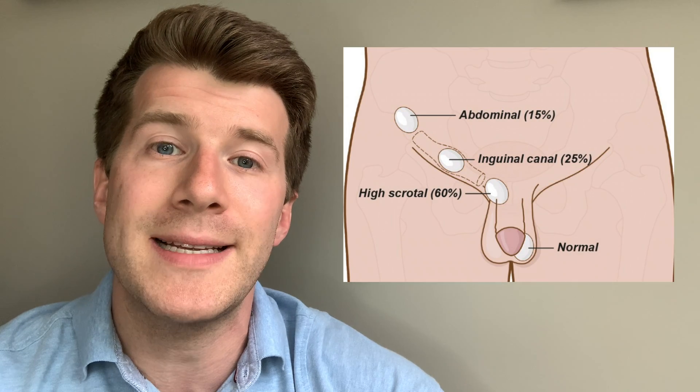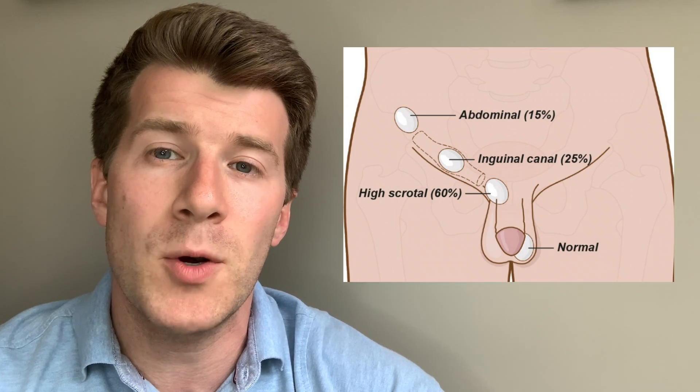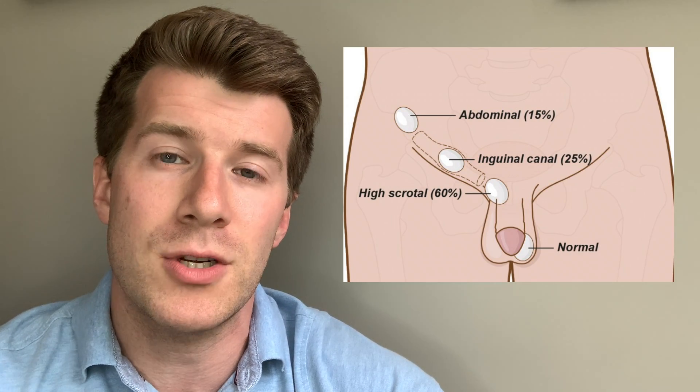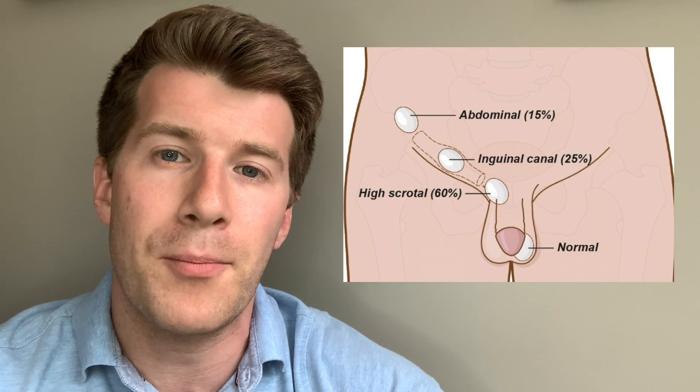AMH can also be measured in male infants who have undescended testicles to determine whether functional testicles are present. Finally, some types of ovarian tumours produce anti-Müllerian hormone, and so its measurement can be used to monitor the effect of treatment and to identify tumour recurrence.